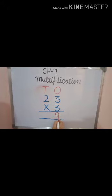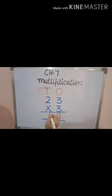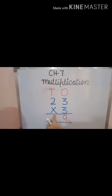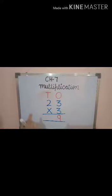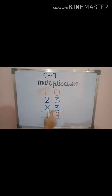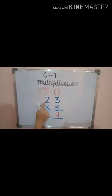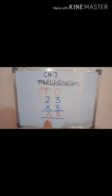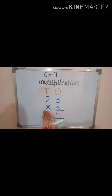So here it is 9. And we take the same 3 and multiply by the next position, which is 2. 3 multiplied by 2 is 6. So here it is 6. The final answer is 69. Thank you.